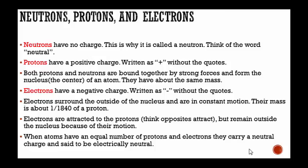When atoms have an equal number of protons and electrons, having an equal number of positive charges and negative charges, they carry a neutral charge and are said to be electrically neutral. You're going to measure the electrons and protons to see if it's going to have a positive or negative charge, because neutrons have no charge. They are neutral.